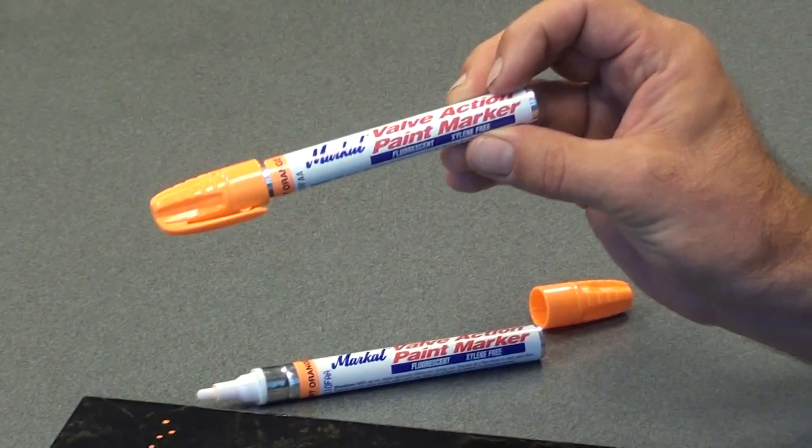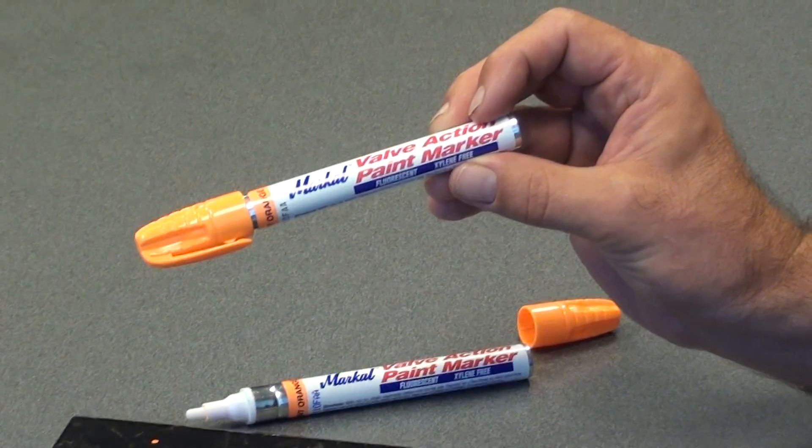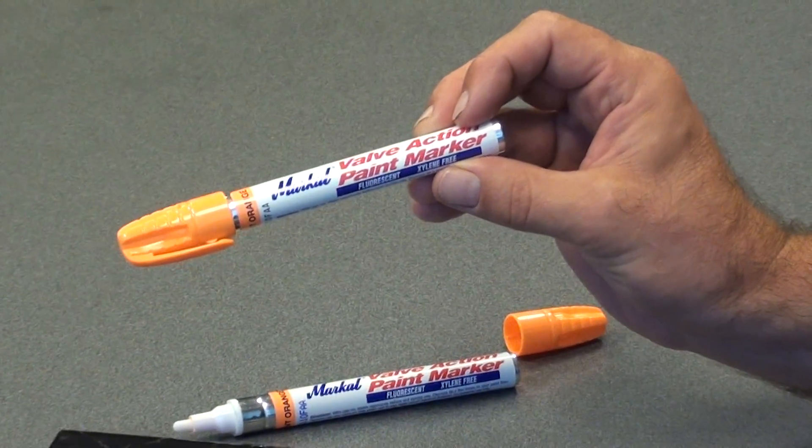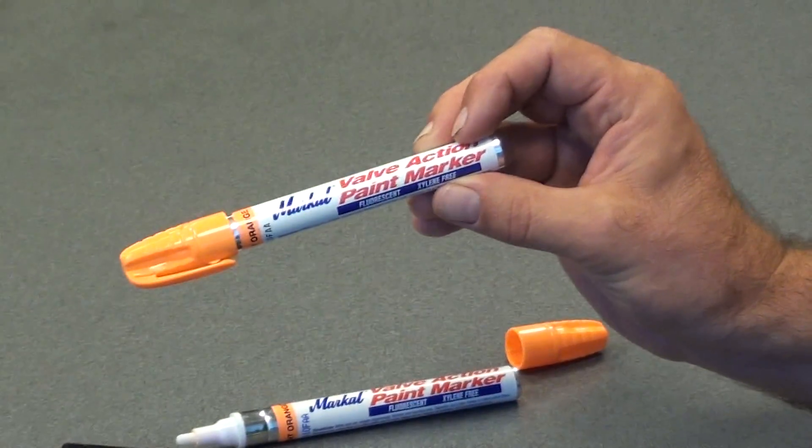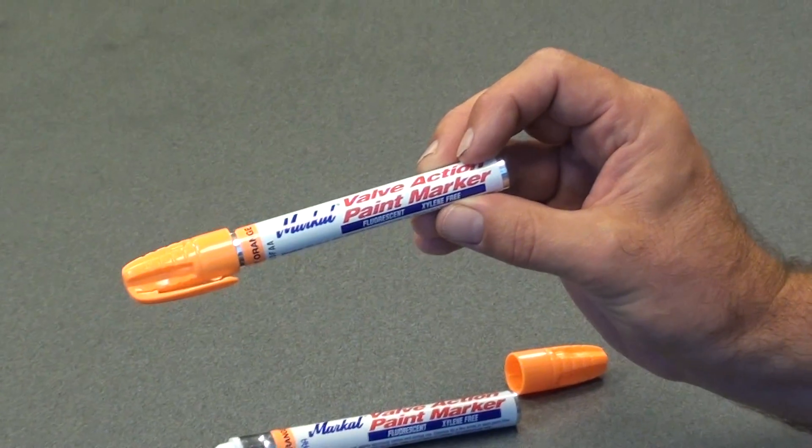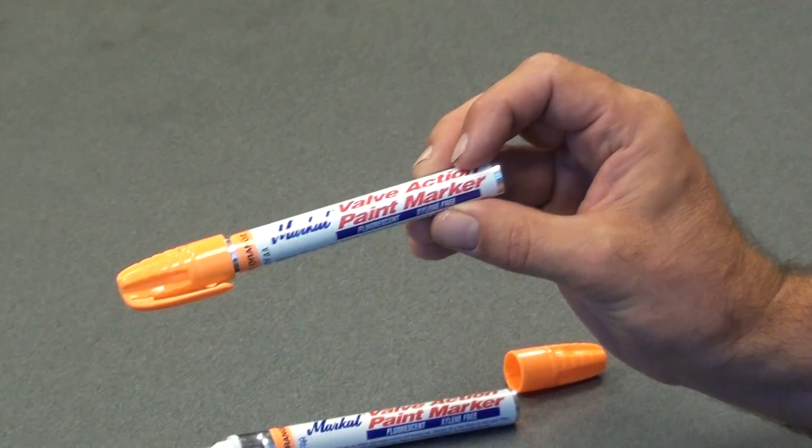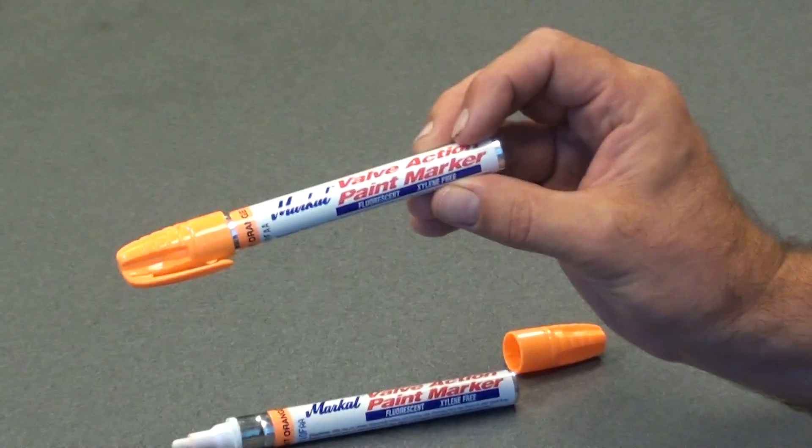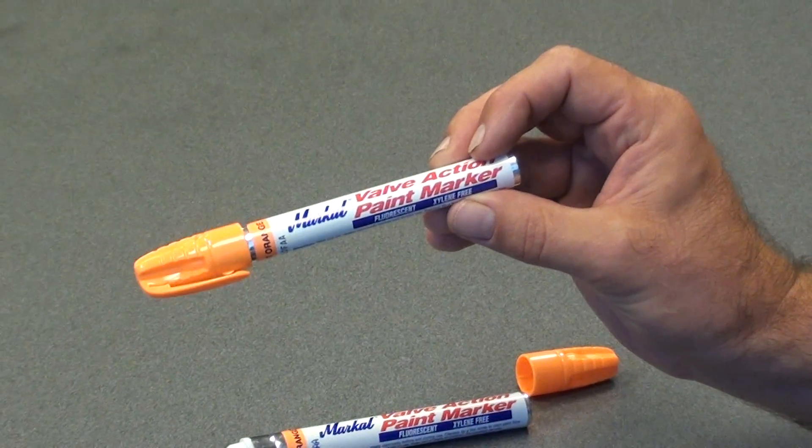Markall valve action paint markers are available through industrial and contractor supply distributors. The fluorescents are available in yellow, green, orange and pink. They also have an invisible UV marker which is great for security and quality control marking.